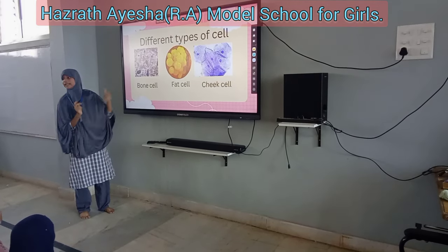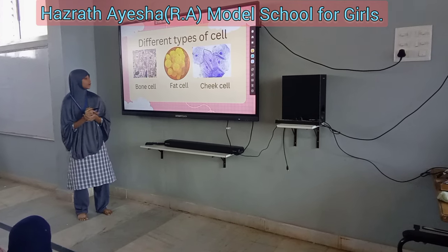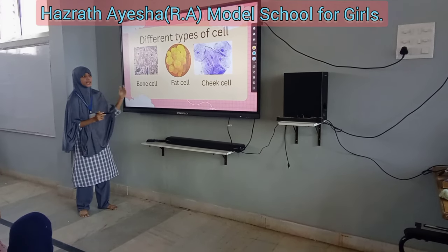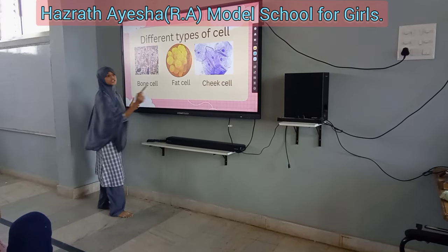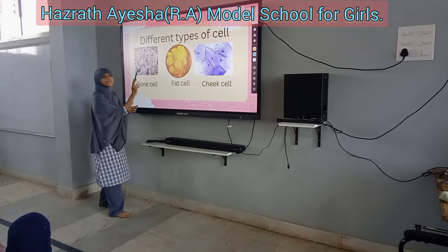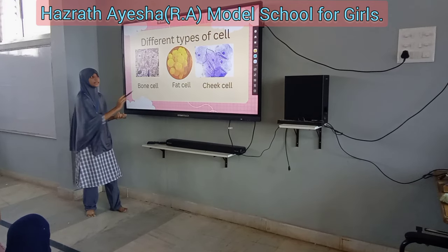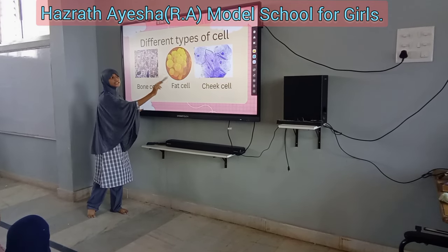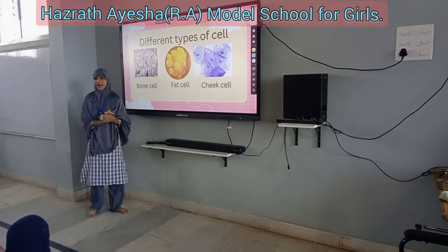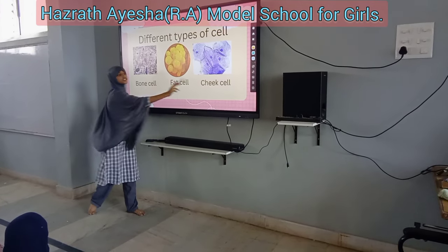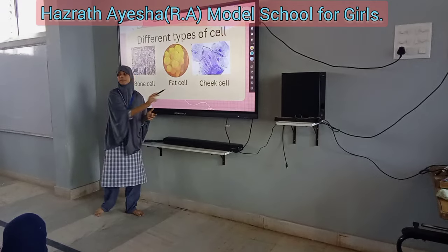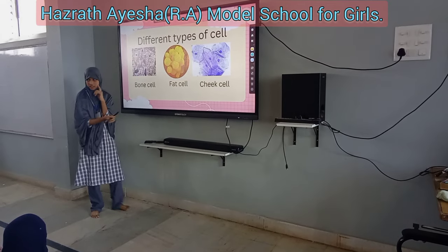There are different forms of cells. There is a bone cell, a fat cell, and a cheek cell. The bone cell is present in our bones. The fat cell is present in fat tissue, and the cheek cell is present in our cheek.